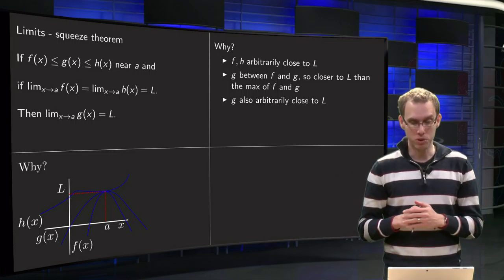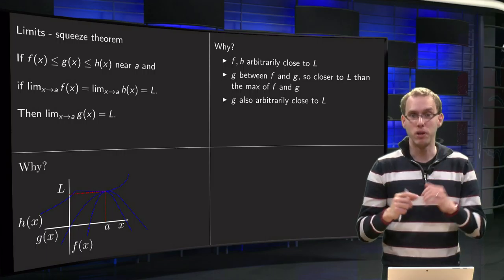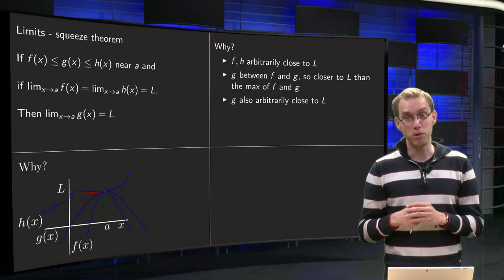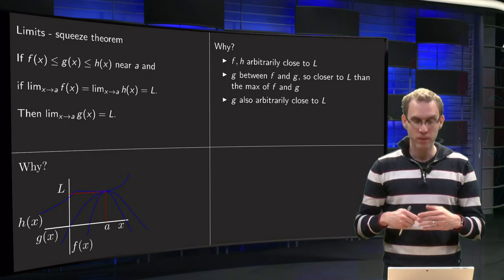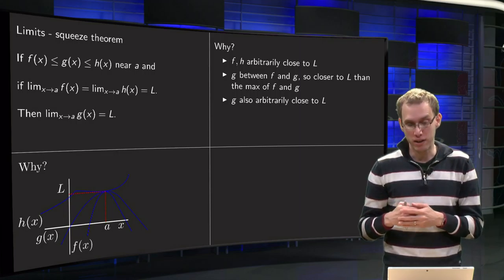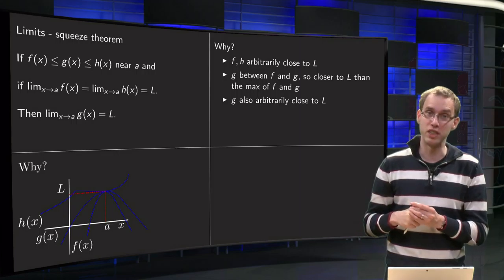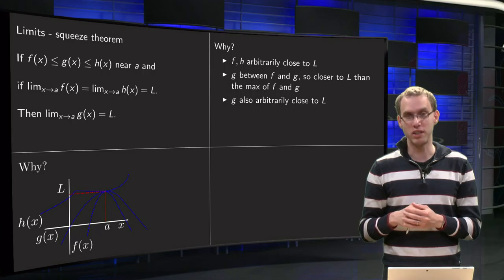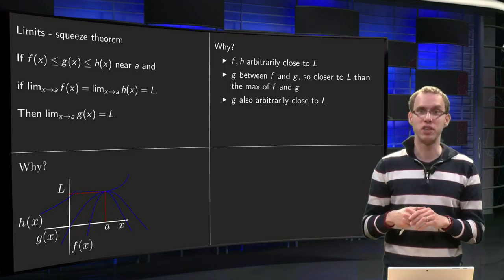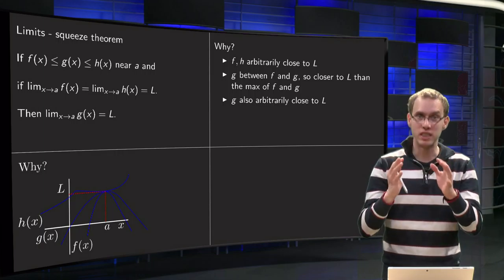So why is that, how could you do that more formally? Well, f and h both get arbitrarily close to L, g is between f and g, so closer to this value L than the maximum of f and g, and that is why g also gets arbitrarily close to L. And if you want you can make this a bit more precise with the epsilons and deltas, but this is the idea.